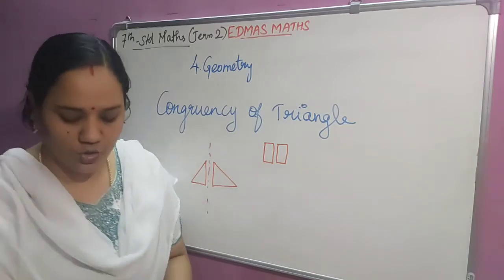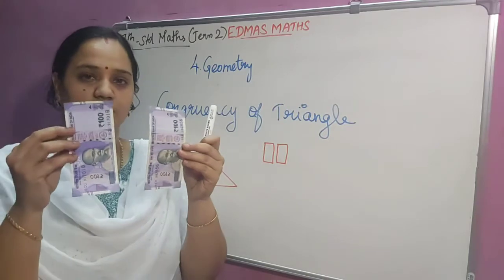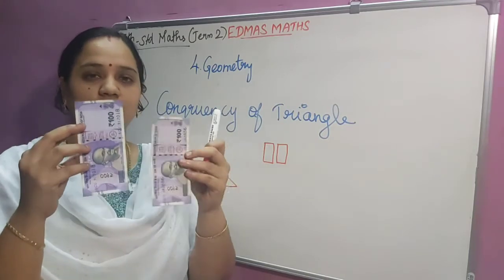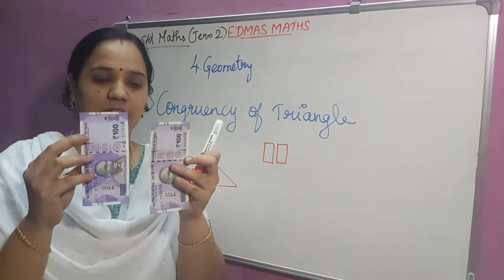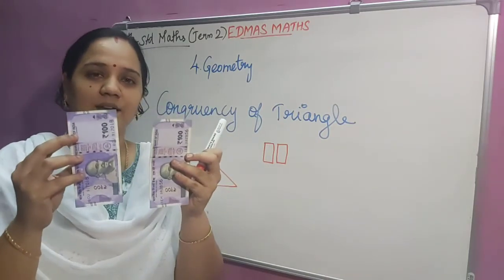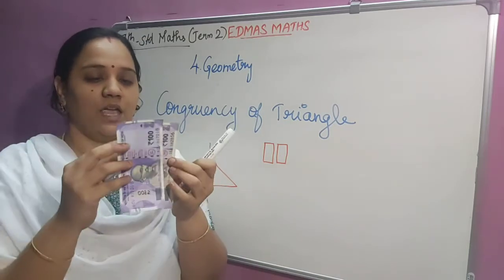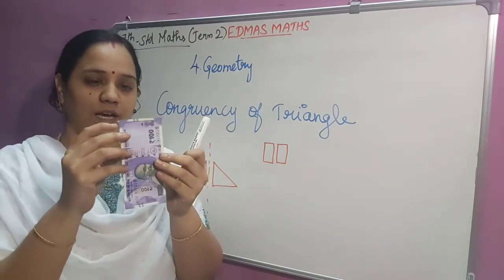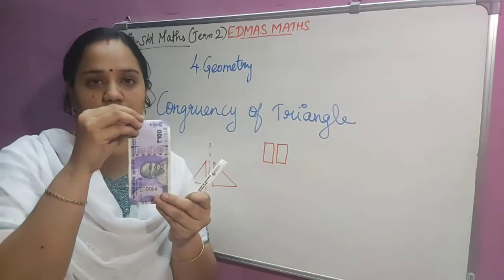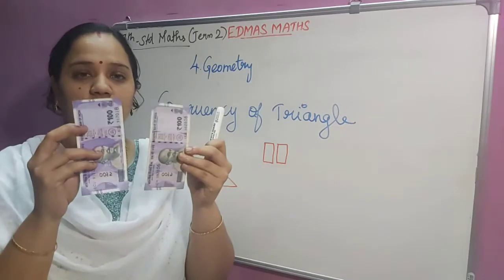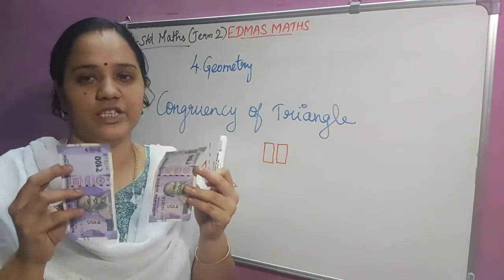Now I am going to show you two rupee notes. We can say these two rupee notes are congruent to each other since they have the same shape and same size. If I am keeping one over the other, they are equal. So these two rupee notes are congruent to each other.